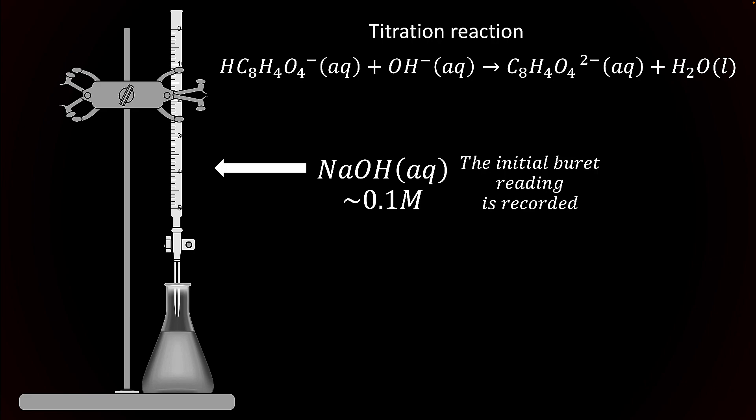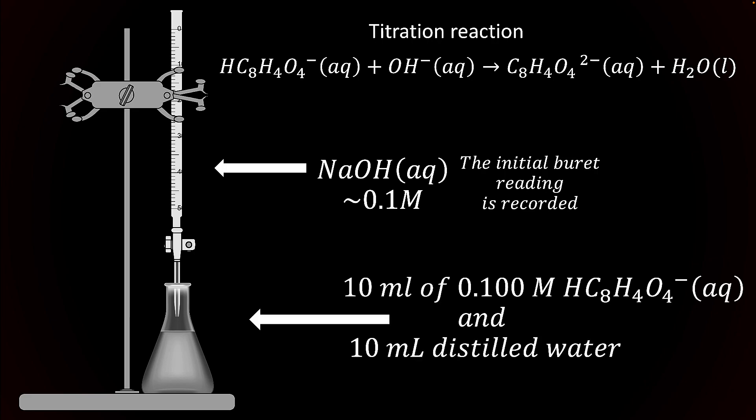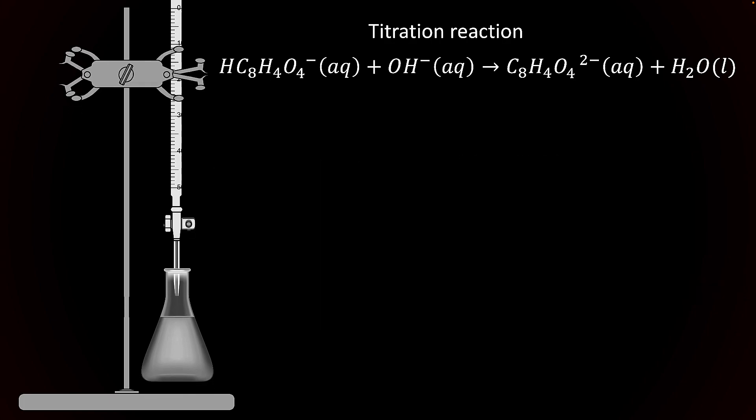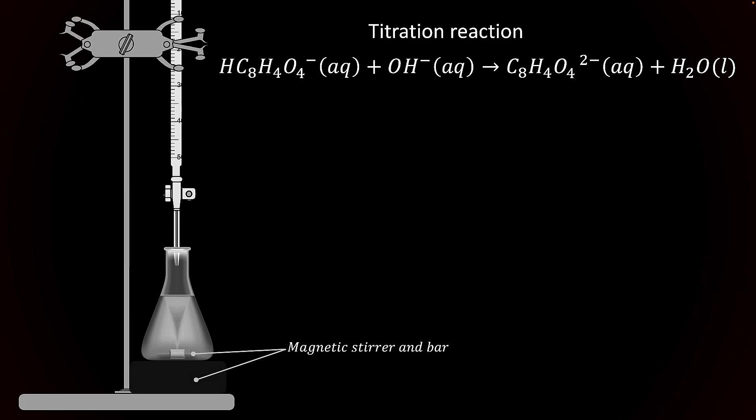The burette is read at this point to obtain an initial reading. We will add 10 milliliters of 0.100 molar potassium acid phthalate solution to an Erlenmeyer flask with 10 milliliters of water. We'll use a magnetic stirrer for this application.